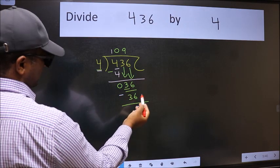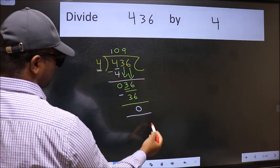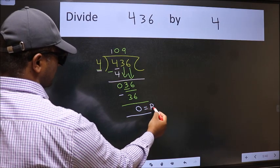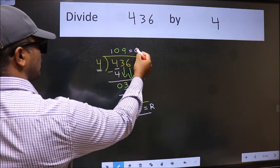No more numbers to bring it down. So we stop here. This is our remainder and this is our quotient.